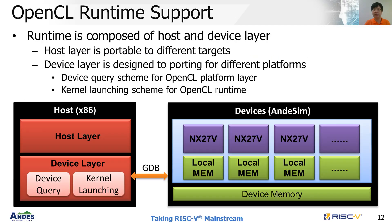We have a hybrid platform to support our tool development and customer usage, where a PC runs the x86 host code and a configurable number of NX27V in the AndesStar system runs the device code. Communication between the host and device is done by GDB. Our OpenCL runtime is composed of a host layer and a device layer. The host layer is portable to different targets, and the device layer is designed for porting to customer platforms. To support a new platform, at least the device query scheme for the OpenCL platform layer and the kernel launch scheme for OpenCL runtime functions must be implemented.